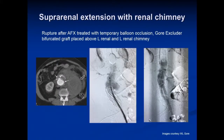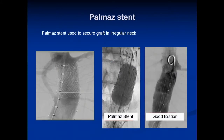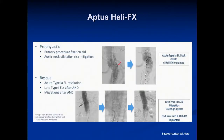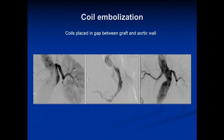Here are some images. Here's a type 1 endoleak causing rupture, repaired by extension with a Gore graft and a renal chimney into the left renal artery, protected with balloon inflation. Here are a couple of pictures of Palma stents securing the aortic neck, causing good fixation in challenging anatomy. Here's the stapler we were talking about, putting these endoscrews through the wall, securing the graft to the aorta. Some more pictures of the Helifix, either prophylactically in challenging anatomy or as a rescue bailout. Here's a picture of coil embolization at the neck, where there was an endoleak and some coils were placed to obliterate the endoleak and the communication with the sac.